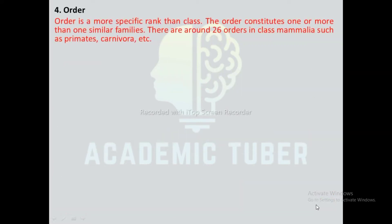Order: Order is a more specific rank than class. The order constitutes one or more than one similar family. There are around 26 orders in class Mammalia, such as Primates, Carnivora, etc.